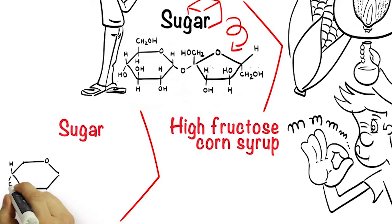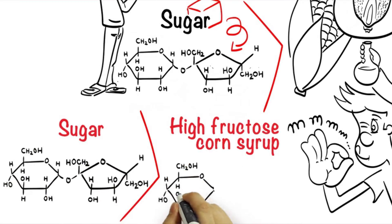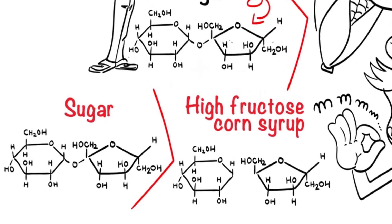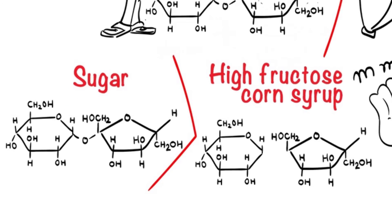Technically, high fructose corn syrup is starch that has some of the glucose converted to fructose — that's why it's called high fructose. But in reality it's the same ratio of glucose to fructose as table sugar. So it's not really higher in fructose than table sugar, but it is higher than regular corn syrup, which wouldn't have the conversion of the glucose to fructose.